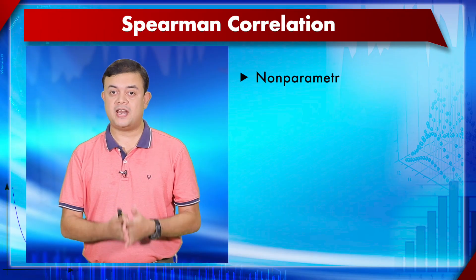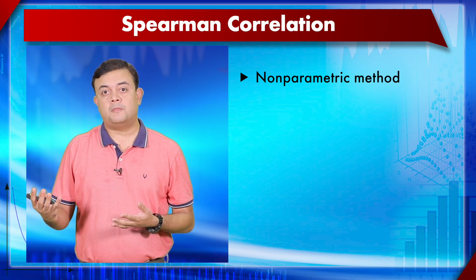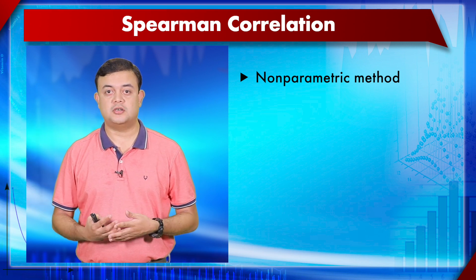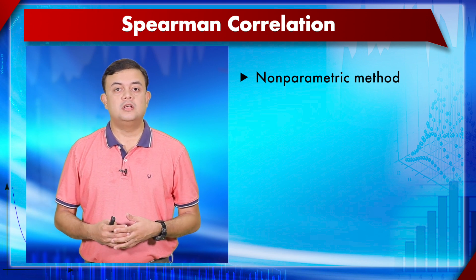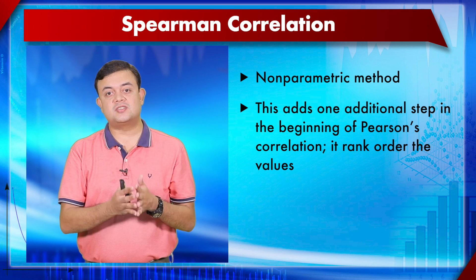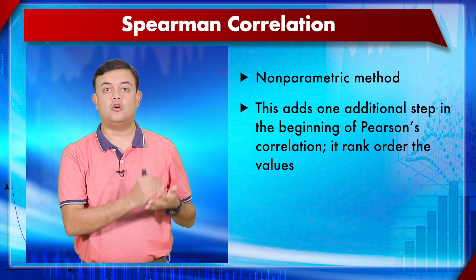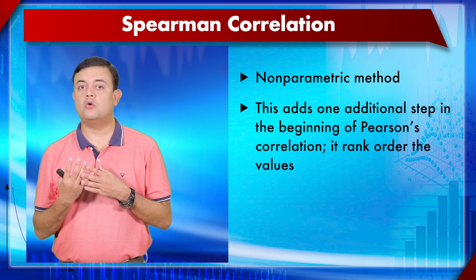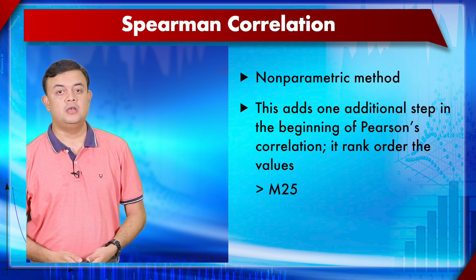Another type of correlation is Spearman's correlation, a non-parametric method that does not depend on the frequency distribution of the population. It adds one step at the beginning: rank-ordering the data, then calculating everything similarly. Spearman's correlation will be explained in module 25.